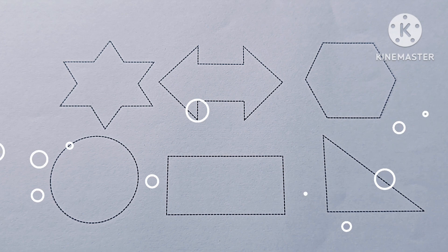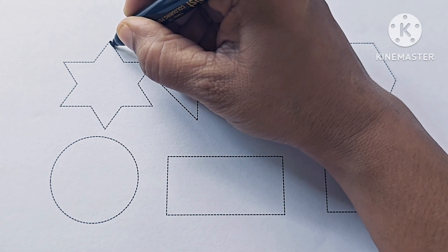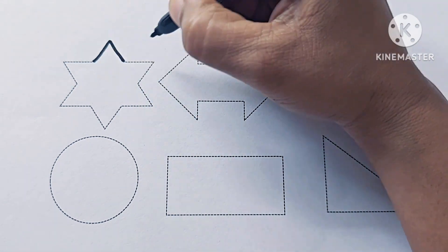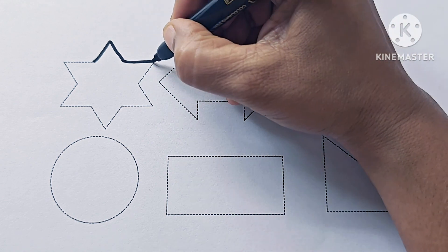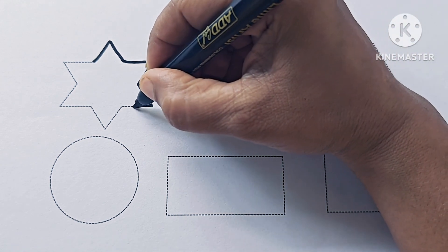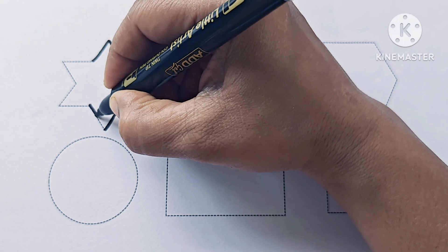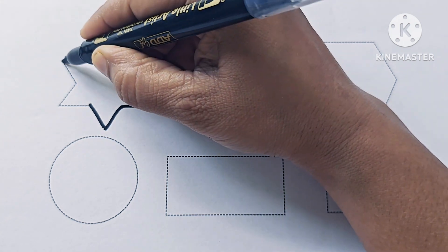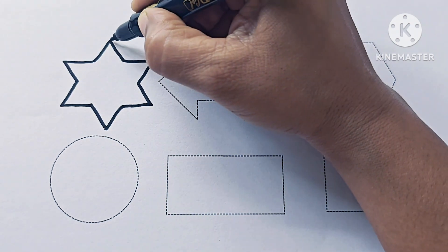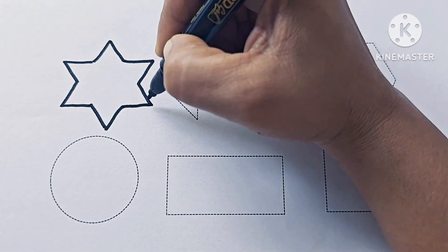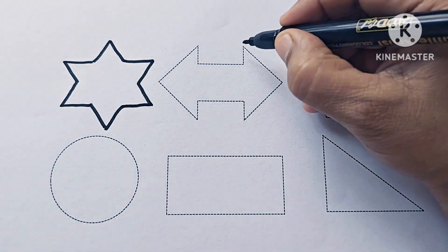Let us draw shapes and symbols. This is a six-pointed star. This star has six points, so it is called a six-pointed star. One, two, three, four, five, six. Six-pointed star.